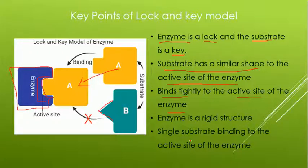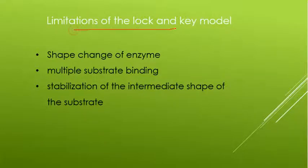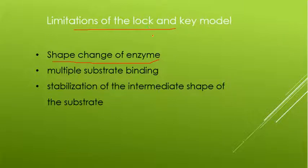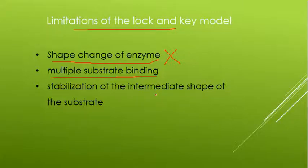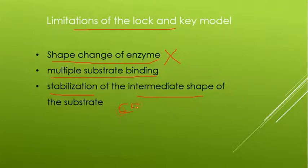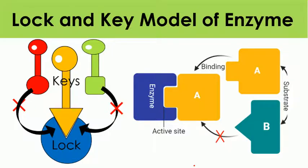However, there are some limitations to this Lock and Key model. The first limitation is the shape change of enzymes — recent studies show that when a substrate binds with the enzyme, the enzyme changes its shape, which this model cannot explain. It also cannot explain multiple substrate binding, since recent studies show that multiple substrates can bind with a single enzyme at one time. Additionally, the model is unable to explain the stabilization of the intermediate shape of the substrate when the enzyme and substrate form an ES complex.